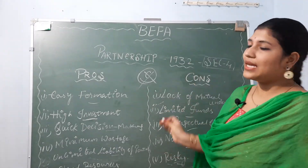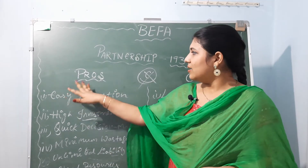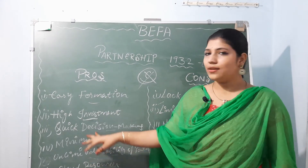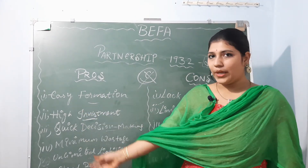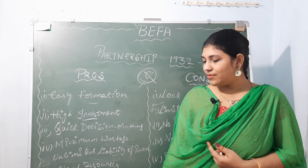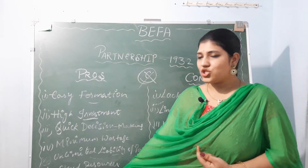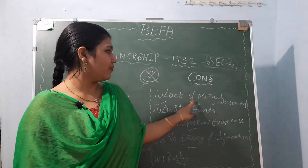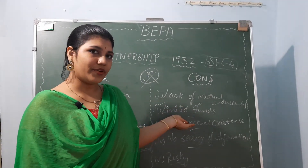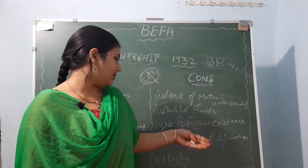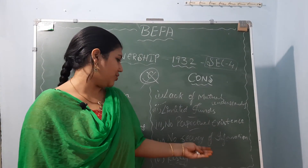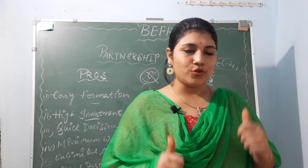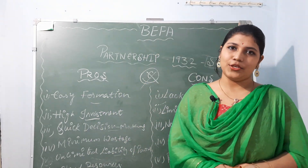That comes to the end of the session. Let's recap the pros and cons. Pros: easy formation, high investment, quick decision making, minimum wastage, unlimited liability of partners, and shared resources. Cons: lack of mutual understanding, limited funds, no perpetual existence, no secrecy of information, and it is risky. I hope it is relevant. If you like it, then stay tuned to Stray Star. Thank you.